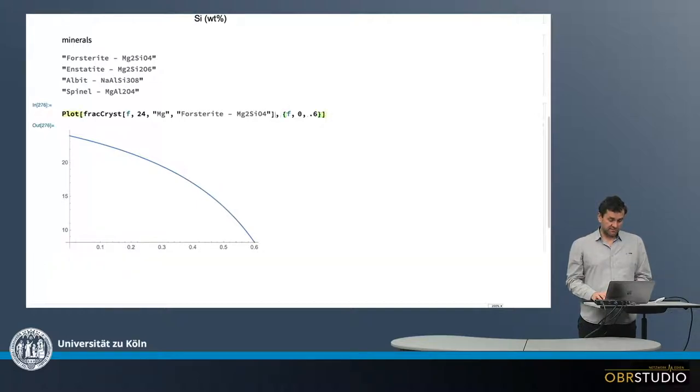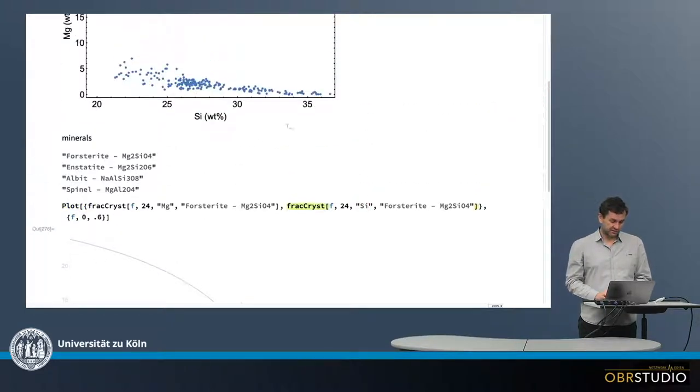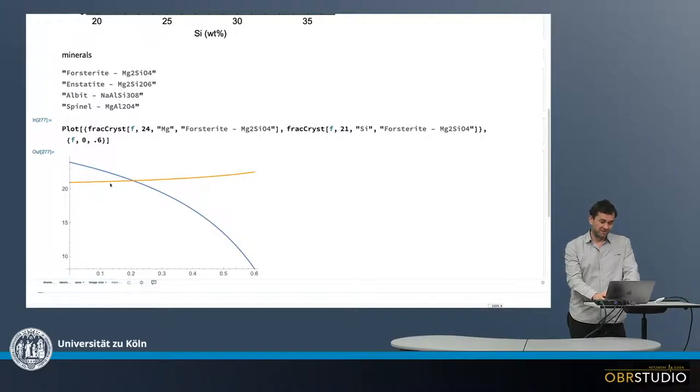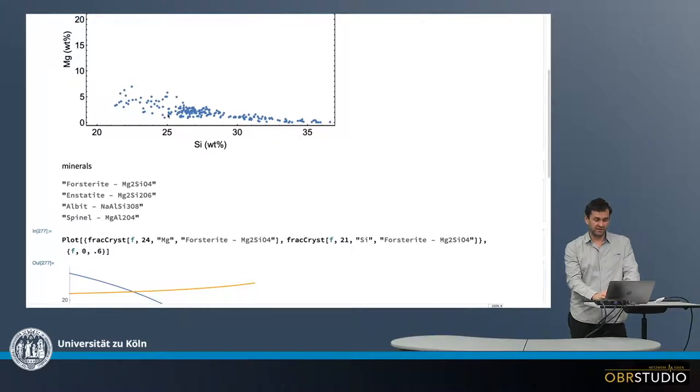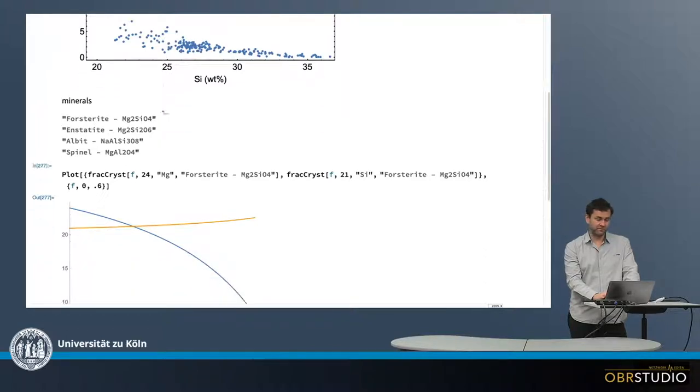Then I want to do the same for silicon. So I make a list here of two of these, with two of these functions or commands. And in the second I put in silicon and silicon should start at about 21 percent. So now I have silicon additive, which is the orange line. So in this plot I now have the magnesium composition of the melt in blue and of silicon in orange. But I cannot add to this plot because there is no amount of fractionated material in this plot. There's only magnesium and silicon, which is both on the same axis here, but different minerals.